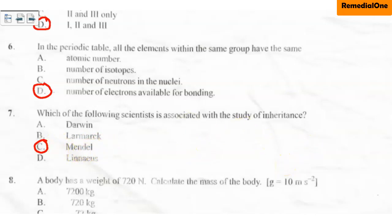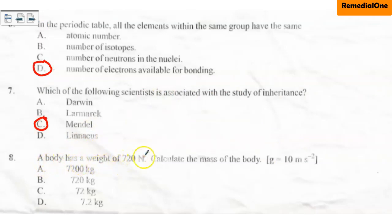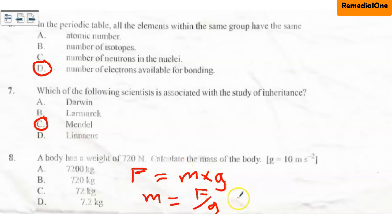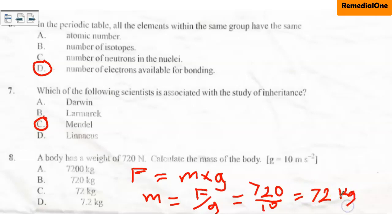Question eight: a body has a weight of 720 newtons. Calculate the mass of the body, given that acceleration due to gravity is 10 m/s². We know that force equals mass times acceleration due to gravity, so mass equals force divided by gravitational acceleration — that is 720 divided by 10. The correct answer is 72 kilograms, which is option C.